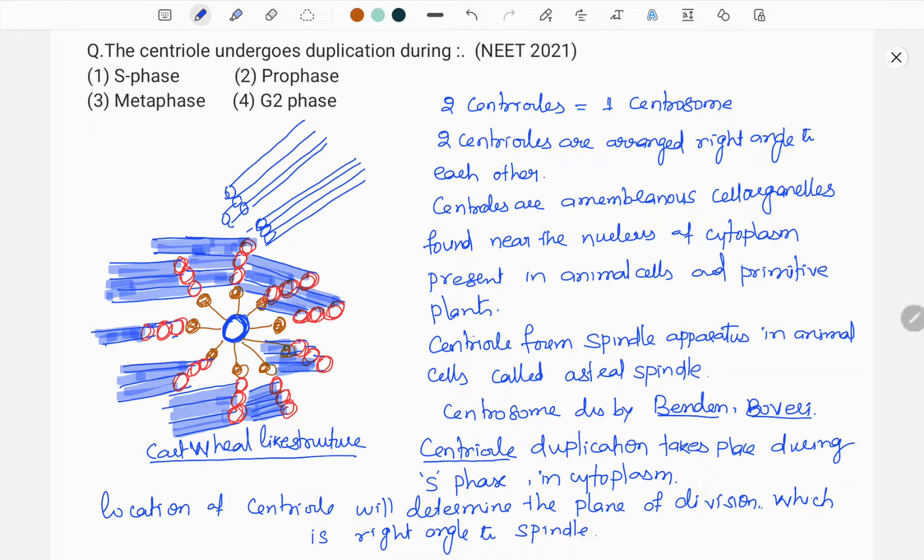Centriole duplication takes place during S phase of the cell cycle. I hope this diagram, two diagrams I gave here, this is one centriole and this is another centriole. Two centrioles are right angle to each other and the two centrioles together called as centrosome.